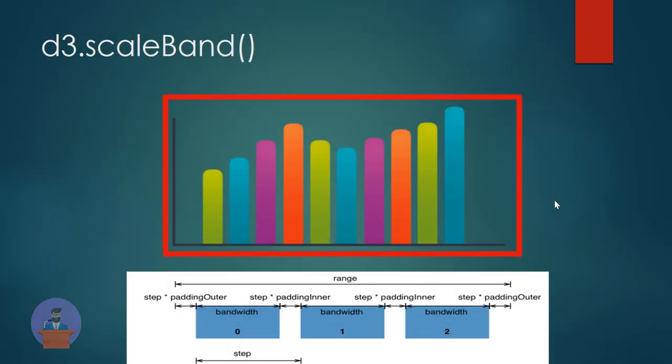So next is the scale band function. This function is basically used to fit your graph in the x-axis direction. It will calculate what the width of each bar should be and what the spacing between each bar should be. When we define it we need to define a unique domain. For example, suppose we want to create a bar graph for sales per year — the year will be on the x-axis, so it should be in a unique format. According to that it will tell you the distance between the bars and the distance of each bar from the y-axis.